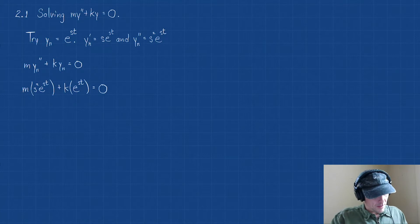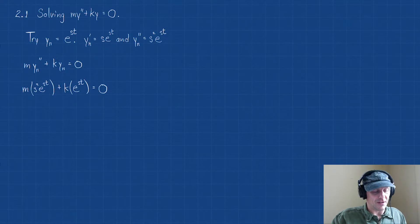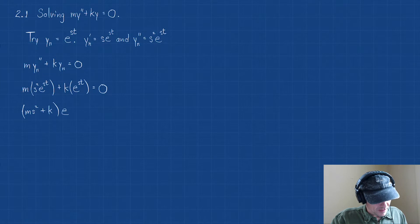Let's keep going. Notice what this is really saying: you could factor the exponential. If we did, we'd have (ms² + k)·e^(st) = 0.